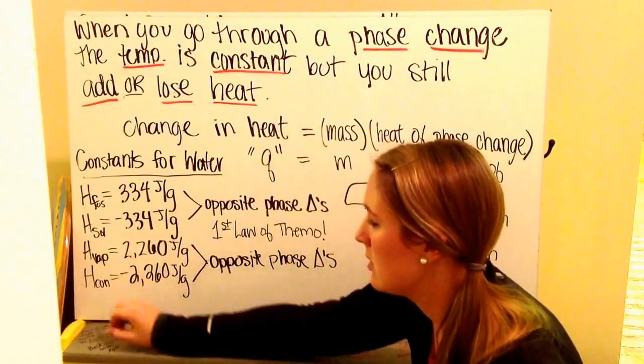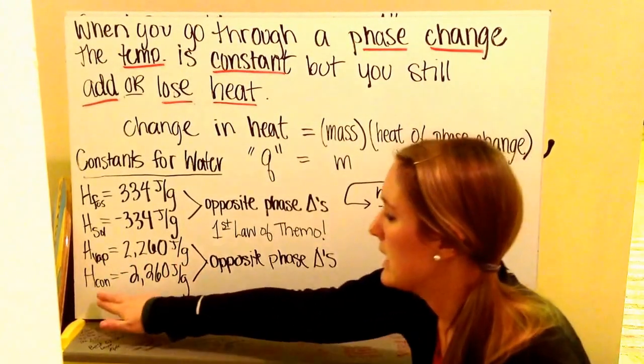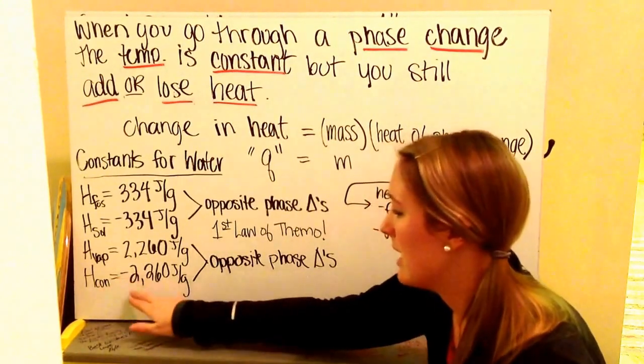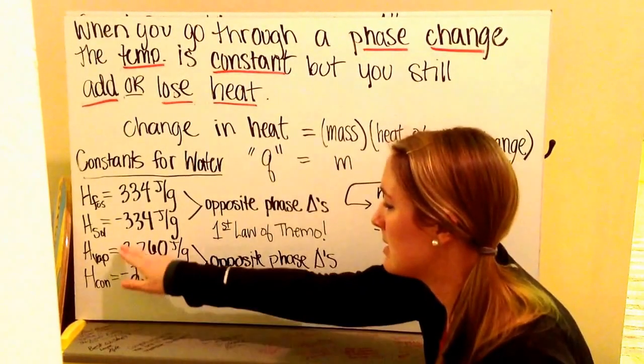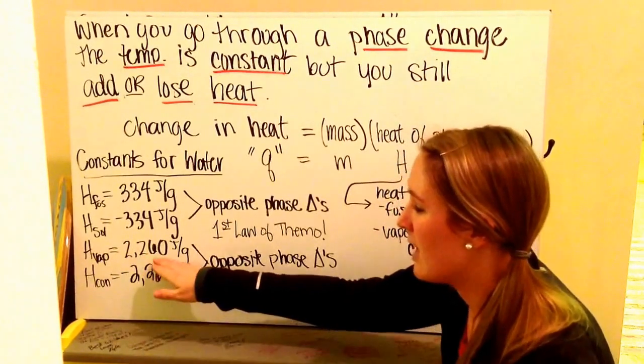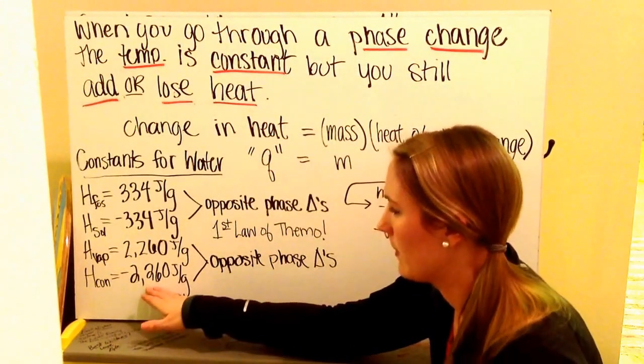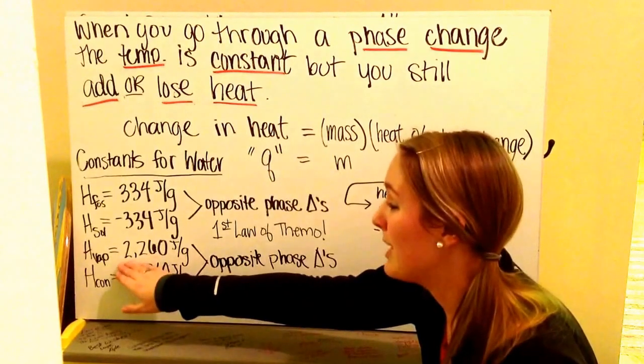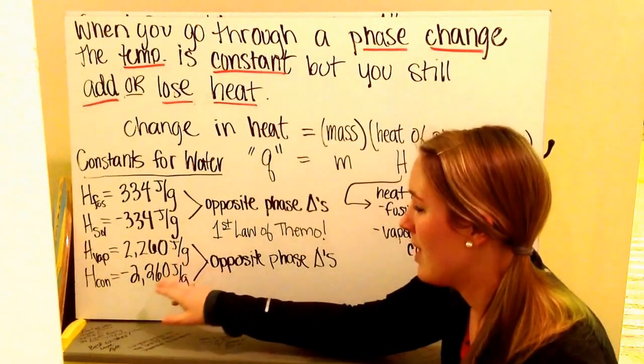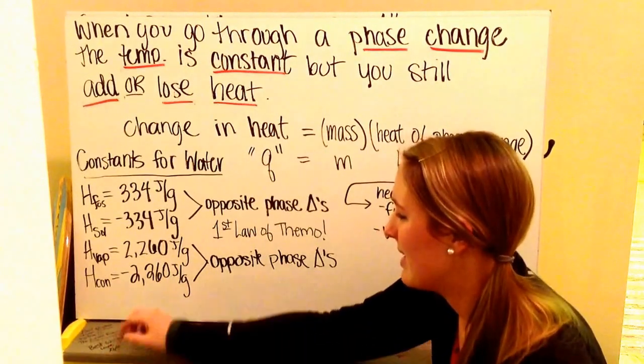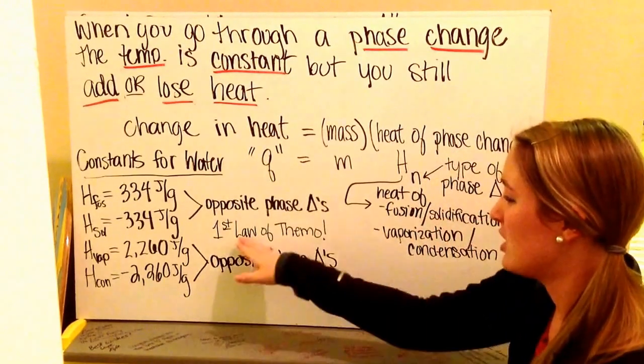Heat of vaporization and heat of condensation. Heat of vaporization is 2260 joules per gram. Heat of condensation is negative 2260 joules per gram. They're opposite phase changes. They're going to be opposite in sign but equal in magnitude because whatever I put into my system during vaporization, my 2260 joules per gram, I'm going to give off when I'm condensing my negative 2260 joules per gram. Opposite phase changes, first law of thermodynamics.